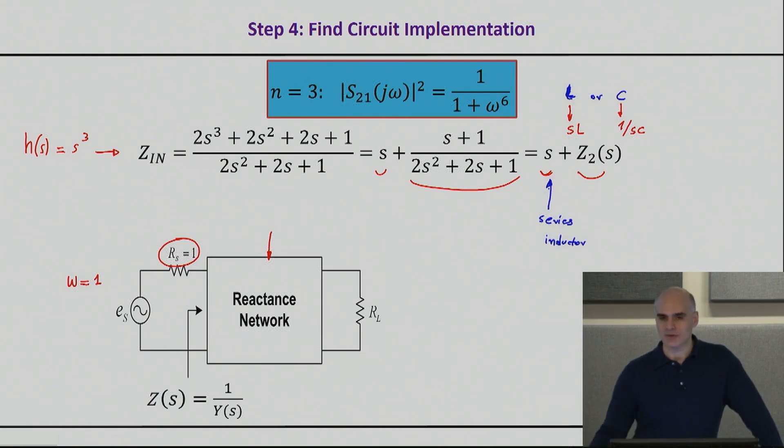Because if I choose a series inductor with an inductance value of 1, then I basically implement the input impedance, at least the first part. And then I'll worry about finding out the input impedance of the second part. So when you start seeing equations like this, it's important to start thinking of what kind of reactive element implements that. And this is basically the hint that I wanted to give you on this part.